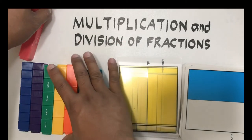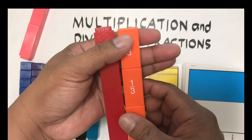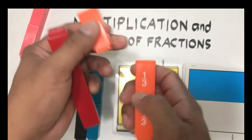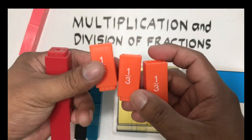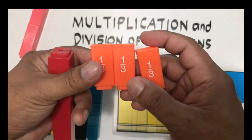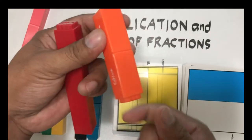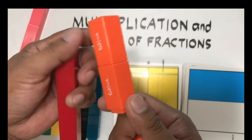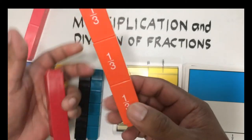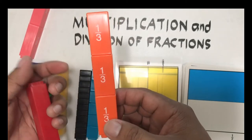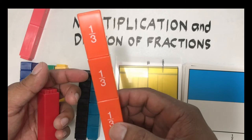If we have this one whole and we want to cut that into three equal parts, we have this fraction, which we call one-third. If we want to take two parts, we call this two-thirds. If we want to take all three parts, we call this three over three, or one whole.